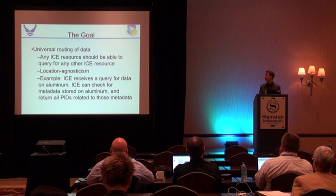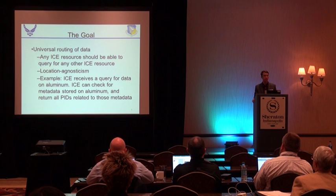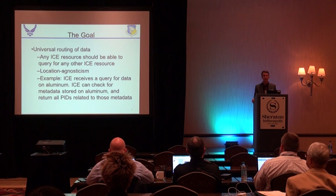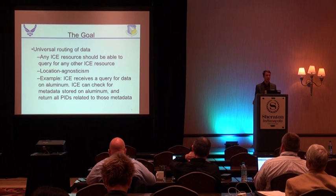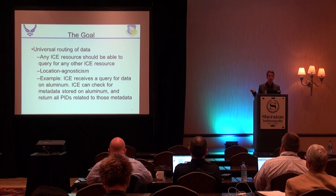We want to be able to route data across any system. The example for today is Titanium 64 - I'm looking for metadata attributes about Titanium 64, I enter into ICE, ICE looks for the metadata, the metadata points to PIDs, and the PIDs point to the exact systems. So we're not going out querying Granta, Plotly, Hub individually - we already know where all that is because we've indexed it. We're not keeping the data, we're just indexing it.